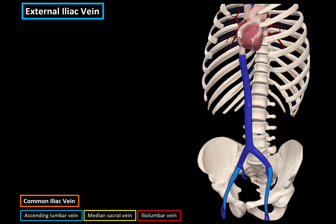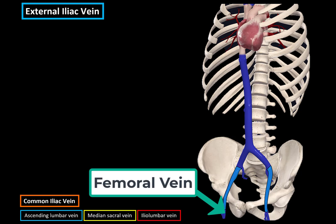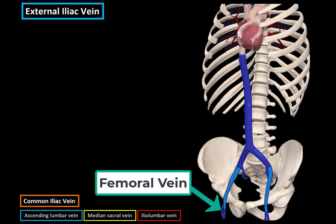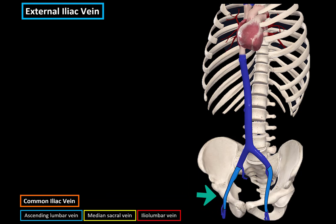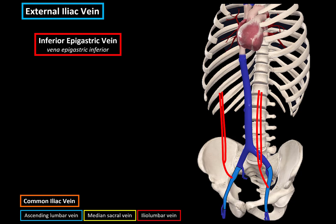Let's now go ahead and do the external iliac veins. The external iliac vein is the continuation of the femoral vein, and it starts at the level of the inguinal ligament within the vascular space. The first tributary of the external iliac vein is the inferior epigastric vein, which starts at the umbilicus region, draining the anterior abdominal wall.